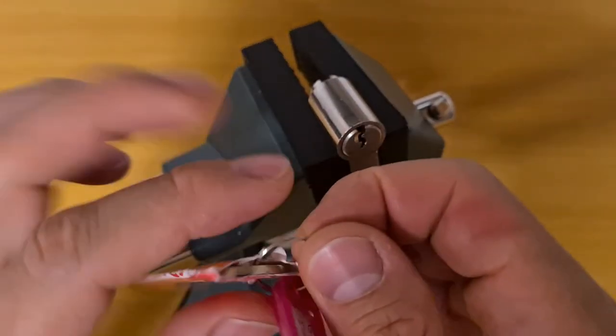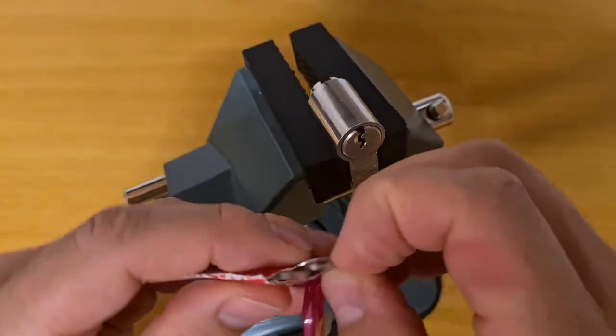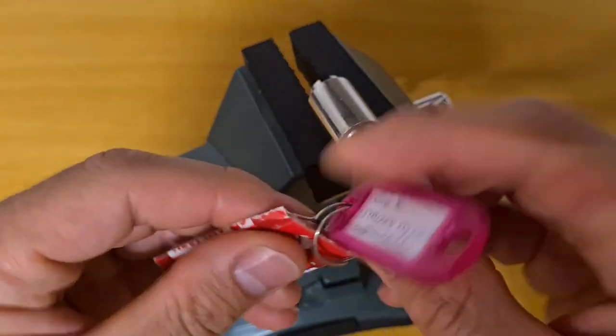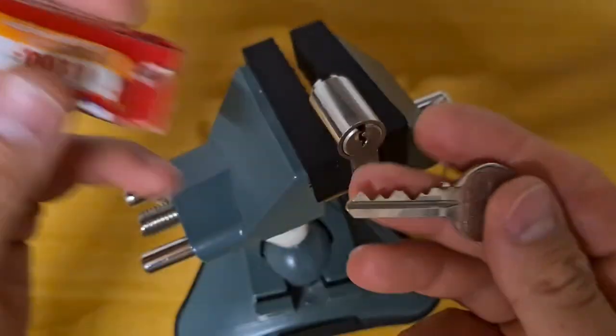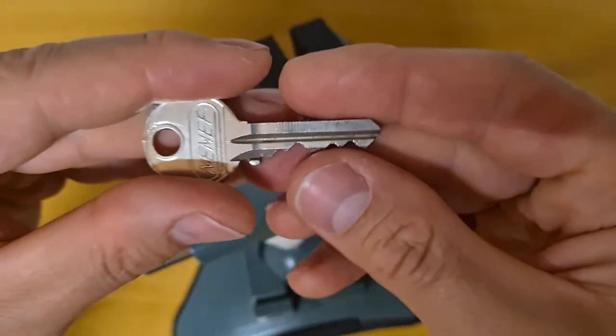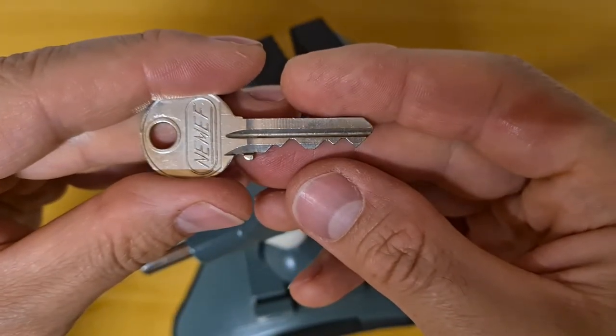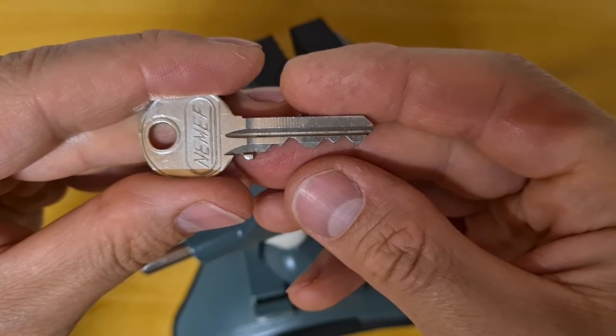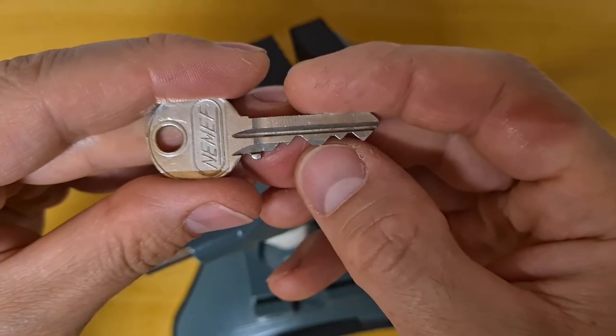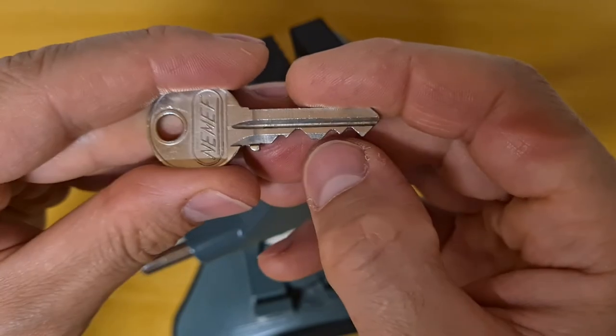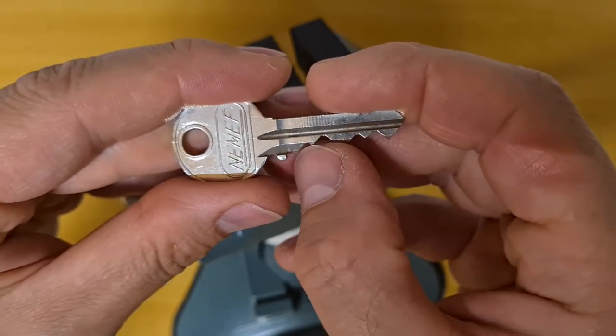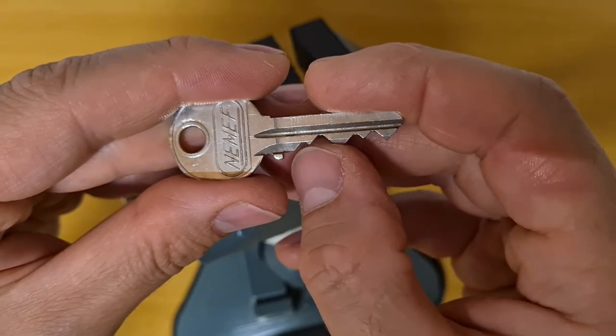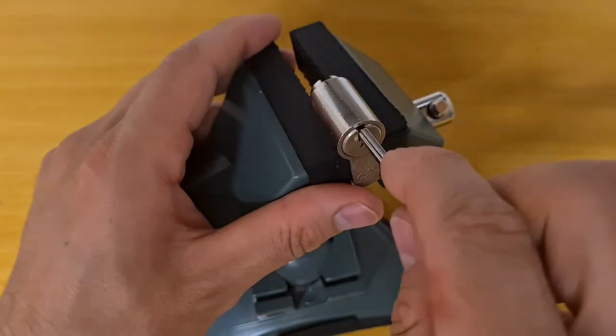So first, here is the key. Let's see how it works. Let's see the bitting. Nice. The three is well hidden behind two, and the four and five are kind of middle cuts. A quite low cut here, so let's see.